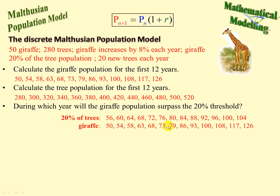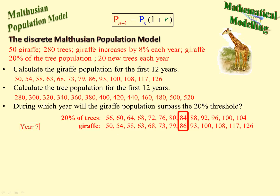All we do is look along the line — year 1, year 2, year 3, year 4, and so on — to see when the giraffes exceed. Don't count that as year 1, because that's position 0. So counting: year 1, year 2, year 3, year 4, year 5, year 6, year 7 — the giraffes exceed at year 7.